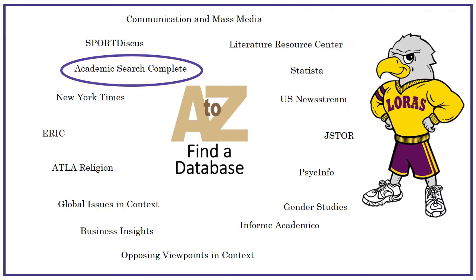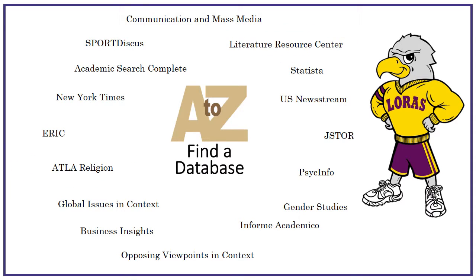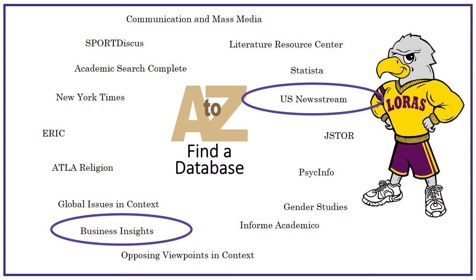Multi-discipline databases, such as Academic Search Complete and JSTOR, are very broad and cover lots of areas of study. Others cover very narrow topics, such as religion or literature, and are subject specific. Others only have certain types of sources in them, such as newspapers or financial reports.